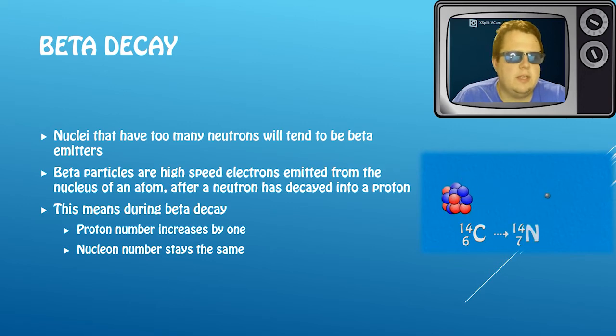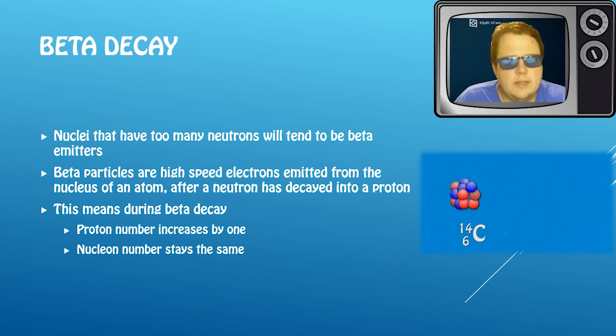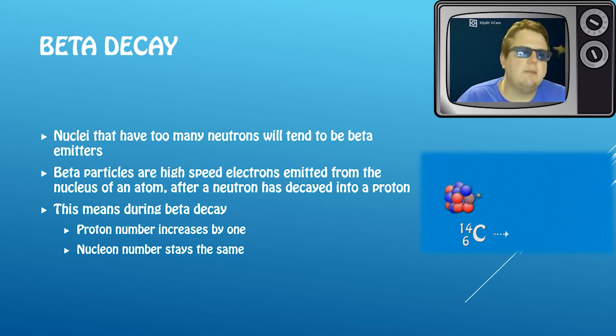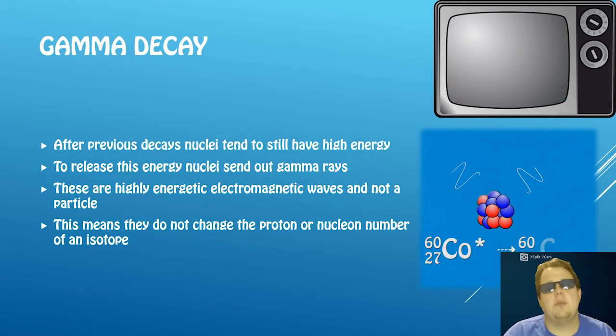But our nucleon number stays the same. So for example, you can see here we have carbon-14 is decaying into nitrogen-14. Nucleon number stayed the same, but our proton number's gone up - we've gone from carbon to nitrogen - and our electron. And you can see in the diagram, you can see one of our reds turning into a blue.